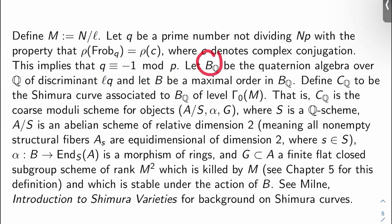Okay, let B_q be the quaternion algebra over Q of discriminant ℓq, and let B be a maximal order in B_q, so an order is just something that spans over Q, which is a lattice over Z, and then maximal means just take a biggest one of those things.